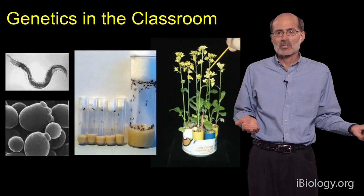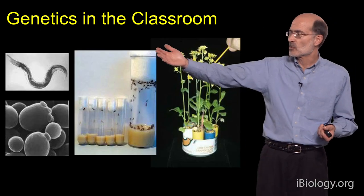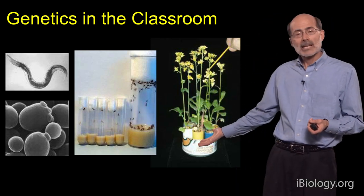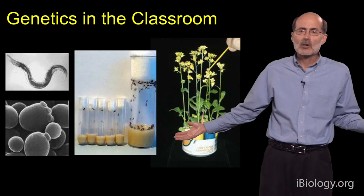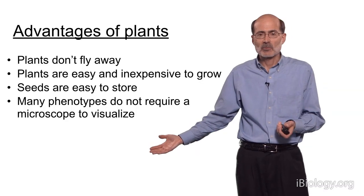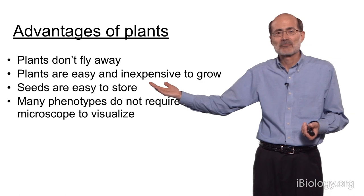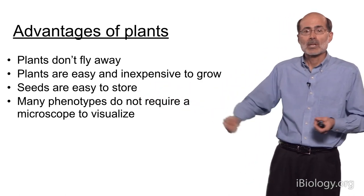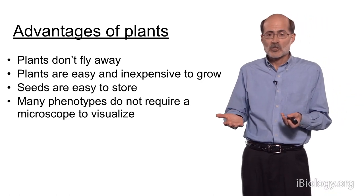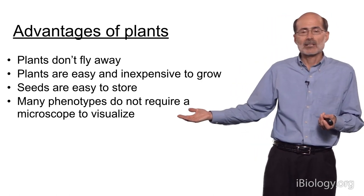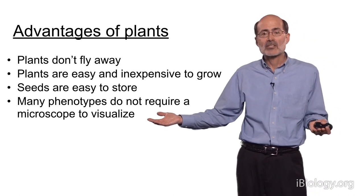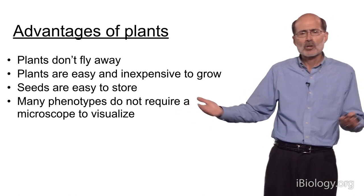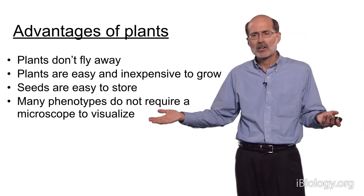There are lots of organisms that are suitable for classrooms. Shown here are a few, such as the nematode C. elegans, or yeast, or drosophila. But also, plants are a good classroom model. Unlike drosophila, they don't fly away. More importantly, plants are easy and inexpensive to grow. The seeds are very easy to store from year to year. And many of the phenotypes that genetic variation, or mutants in plants, exhibit are easy to visualize without any equipment, like a microscope.